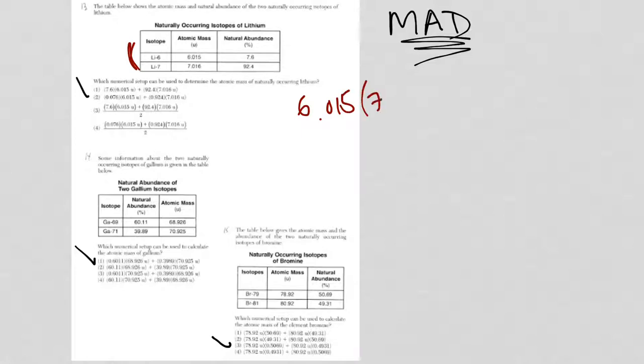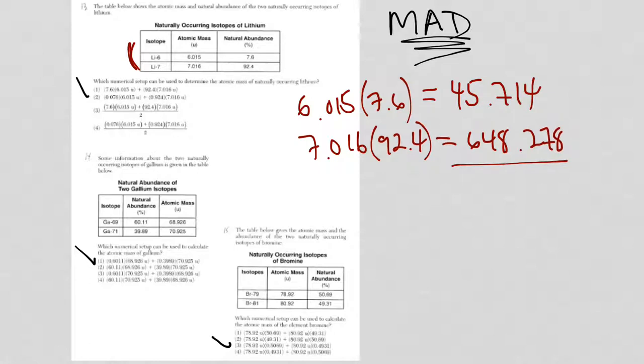I'm going to take my atomic mass and I'm going to multiply by the percent. And I'm going to do the same thing for the second one, atomic mass. Now I'm multiplying by the percent. That's the first part. That's the M.